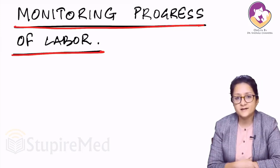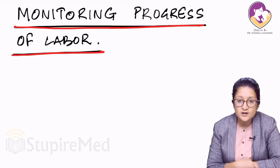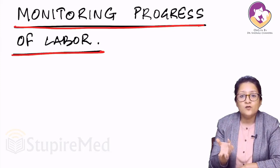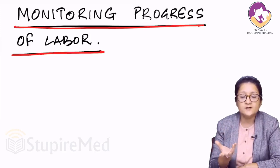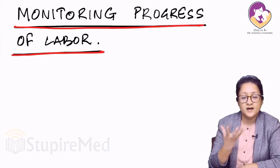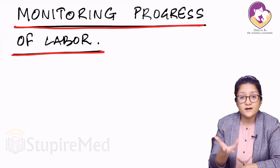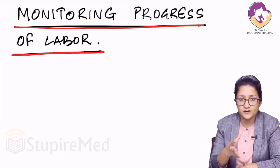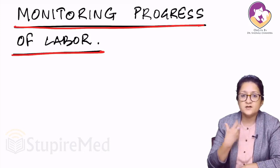Normal labor applies to the majority of low-risk women who enter spontaneous labor with singleton pregnancies. Normal labor refers to pregnancies that are at term, singleton, allow spontaneous progression, and proceed without any undue interference. We have to ascertain how labor progresses normally.